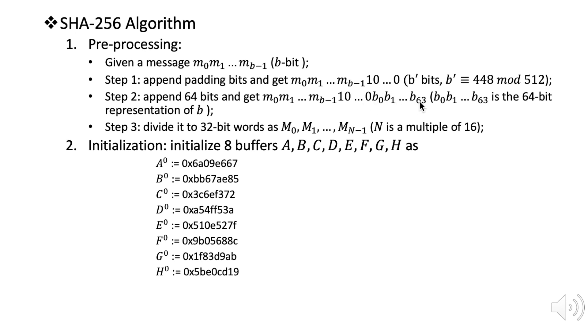After that we're going to append another 64 bits, which is b0, b1, until b63. Now the length of this message becomes a multiple of 512, and this 64 bits is actually the representation of the number b, where b is the length of the original message.